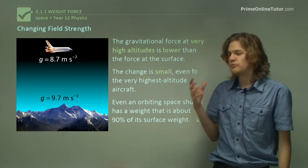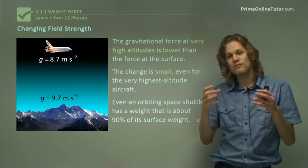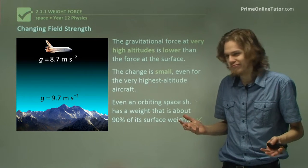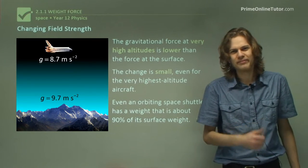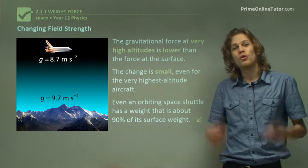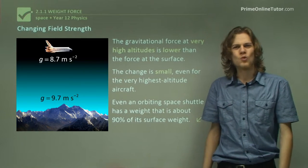It turns out that the space shuttle orbits so close to Earth that it still has a very strong force attracting it toward the ground. So why doesn't it fall down? Well, we'll get onto that in a little bit. For now, that's the end of the theory. So we've gone over what gravitational force is and what the Earth's gravitational field looks like. Let's go on to some questions.